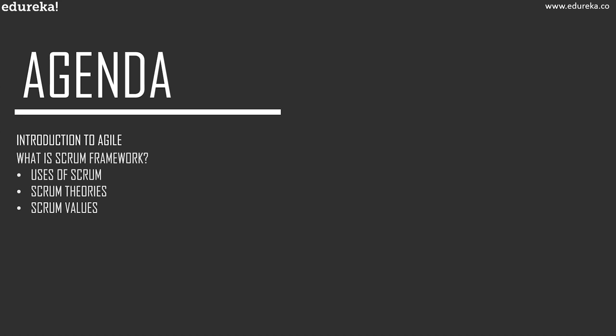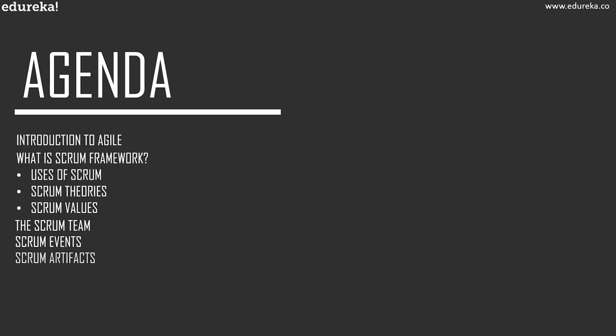Before we begin, let's go through today's agenda. We will start with a brief introduction to Agile, then get into the Scrum framework — covering uses of Scrum, Scrum theories, Scrum values, and the three important components: Scrum team, Scrum events, and Scrum artifacts. After that, we will learn how the entire Scrum sprint process works, and then end by discussing some success stories of the Scrum framework.